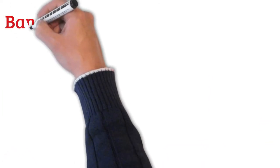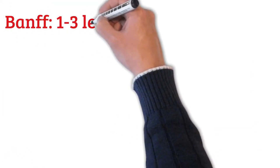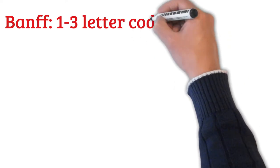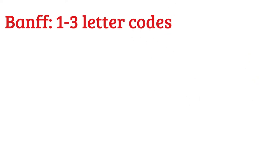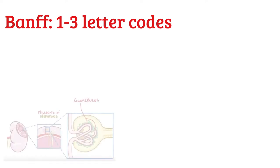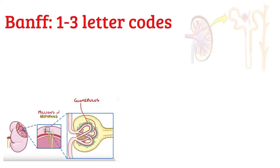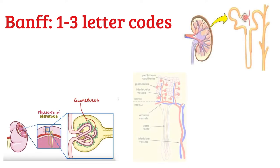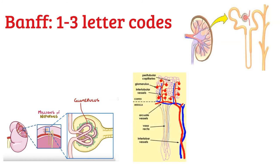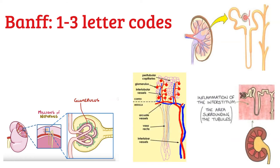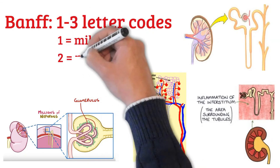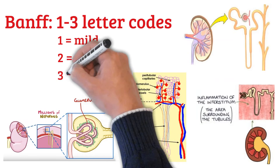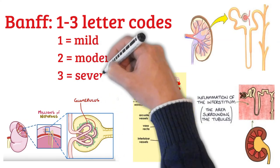To unify, the Banff classification of allograft pathology created Banff codes, which are one-to-three letter codes that represent various involved parts, including the glomerulus, the renal tubules, and the renal vasculatures — including arteries, peritubular capillaries, and the interstitial tissue. According to the severity, the letters are labeled with numbers: one for mild, two for moderate, and three for severe.